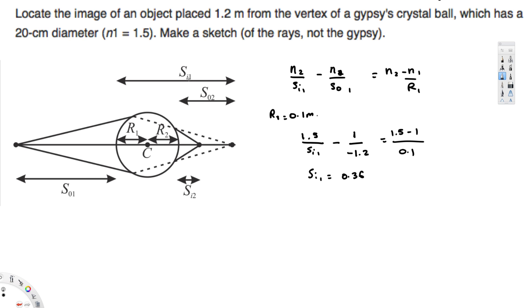And we can calculate sₒ₂, right? Because if you subtract diameter from sᵢ₁, that's going to give you the sₒ₂ distance. And diameter is 0.2, right? And if we subtract 0.2 from this one, that's going to give us sₒ₂, that's equal to 0.16.